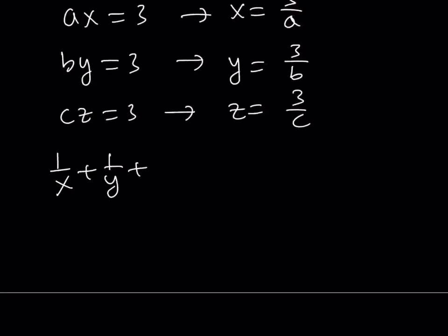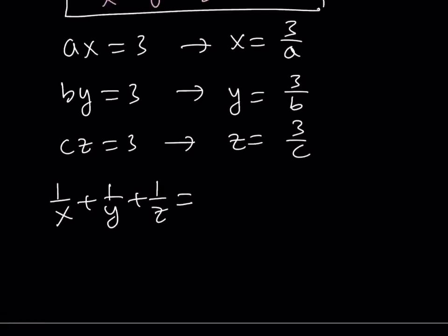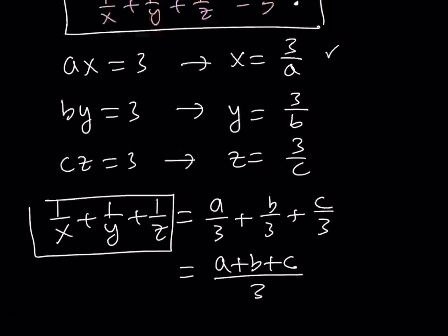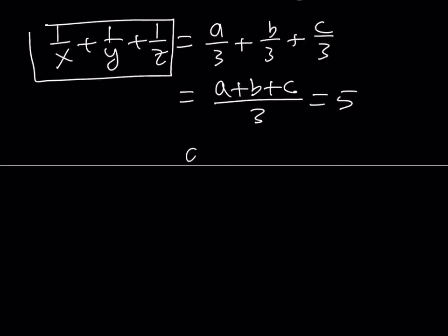One over X is the reciprocal of X. And X is equal to three over A. So the reciprocal of three over A is A over three. Reciprocal of Y is B over three. And reciprocal of Z is C over three. And this gives us A plus B plus C over three. But we do know that one over X plus one over Y plus one over Z equals five. Therefore, this equals five. And now, by using cross multiplication, we get that A plus B plus C is equal to three times five, which is 15.